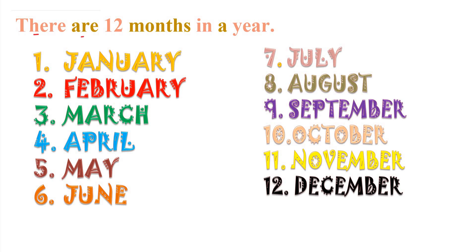Now, there are twelve months in a year. First month: January. Second month: February. Third month: March. Fourth month: April. Fifth month: May. Sixth month: June. Seventh month: July. Eighth month: August. Ninth month: September. Tenth month: October. Eleventh month: November. Last and twelfth month: December.